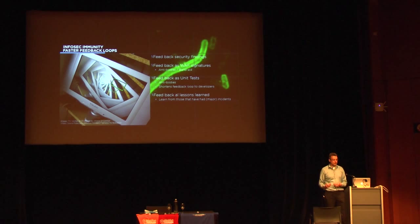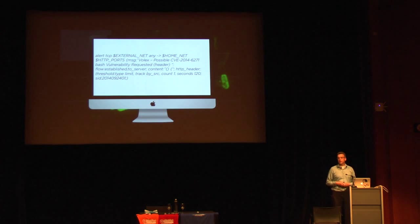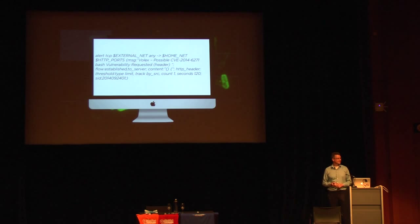That feedback loop means taking knowledge learned from analyzing the vulnerability, how it affected us, and putting it into our WAF system immediately. But also putting it into unit tests to shorten that feedback loop to developers. For example: who knows what this Snort IPS signature works against? It's Shellshock.